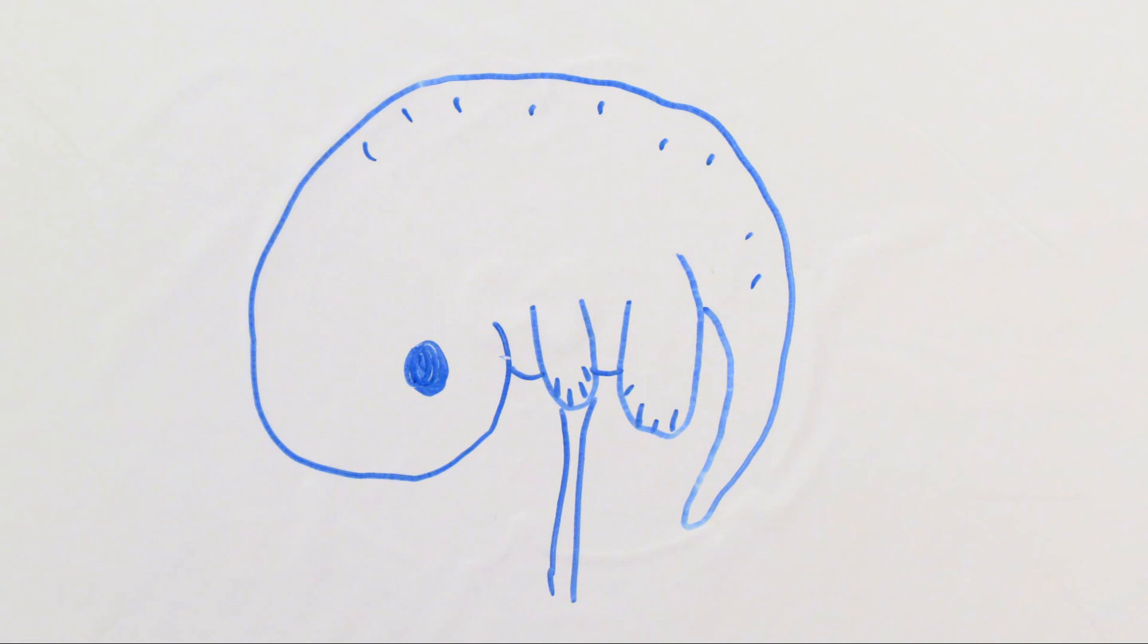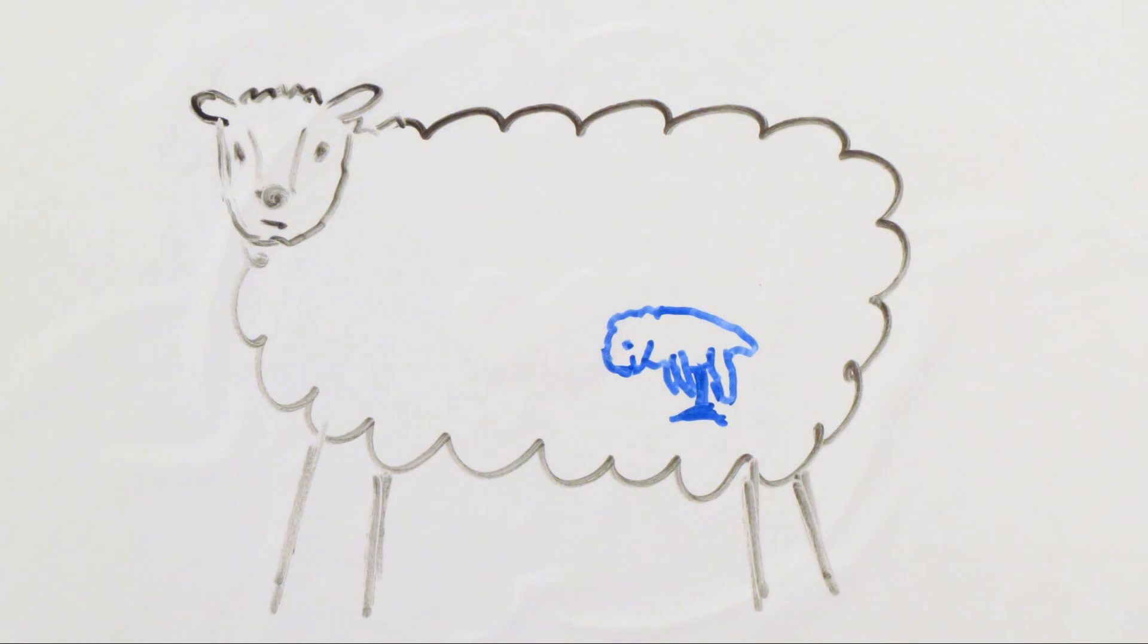The embryo is implanted in the uterus of a surrogate mother and after the gestation period is over the clone of the animal is born.